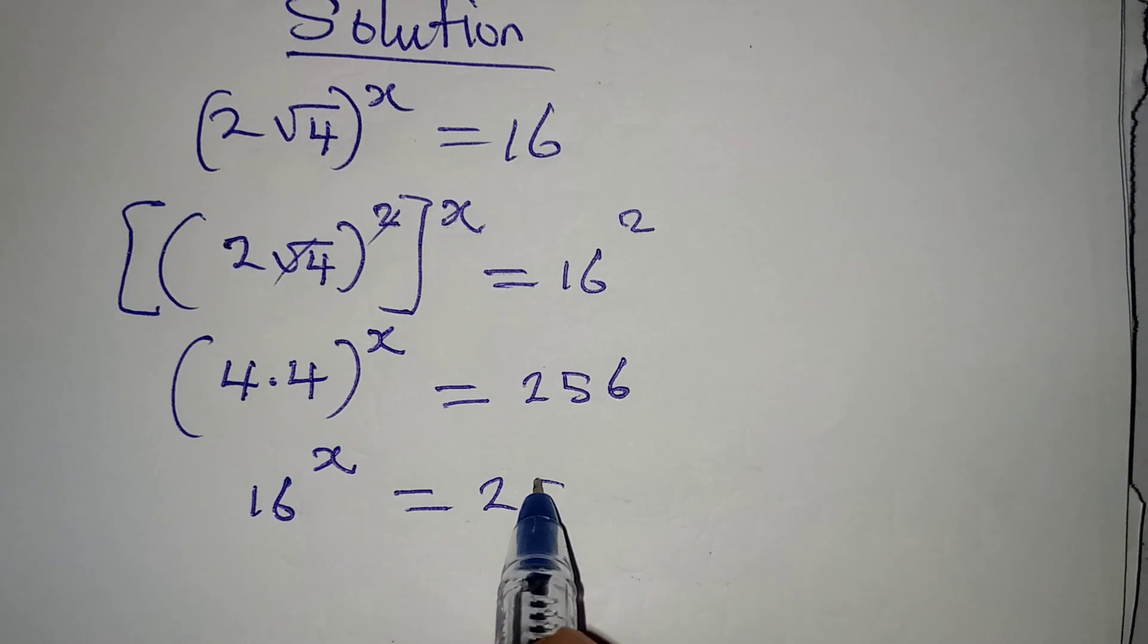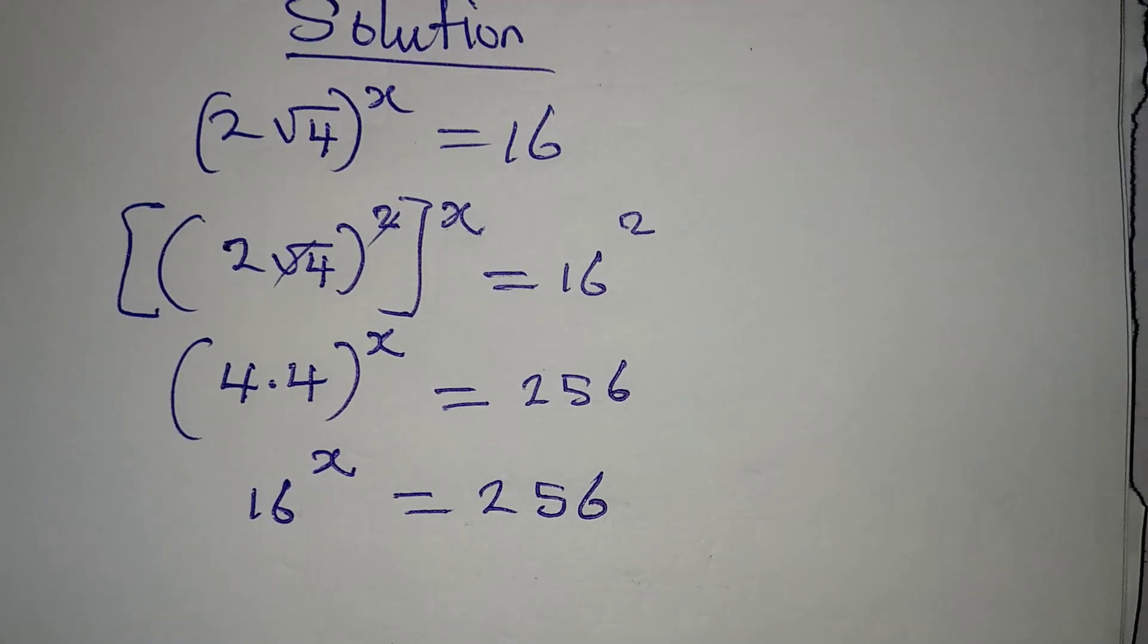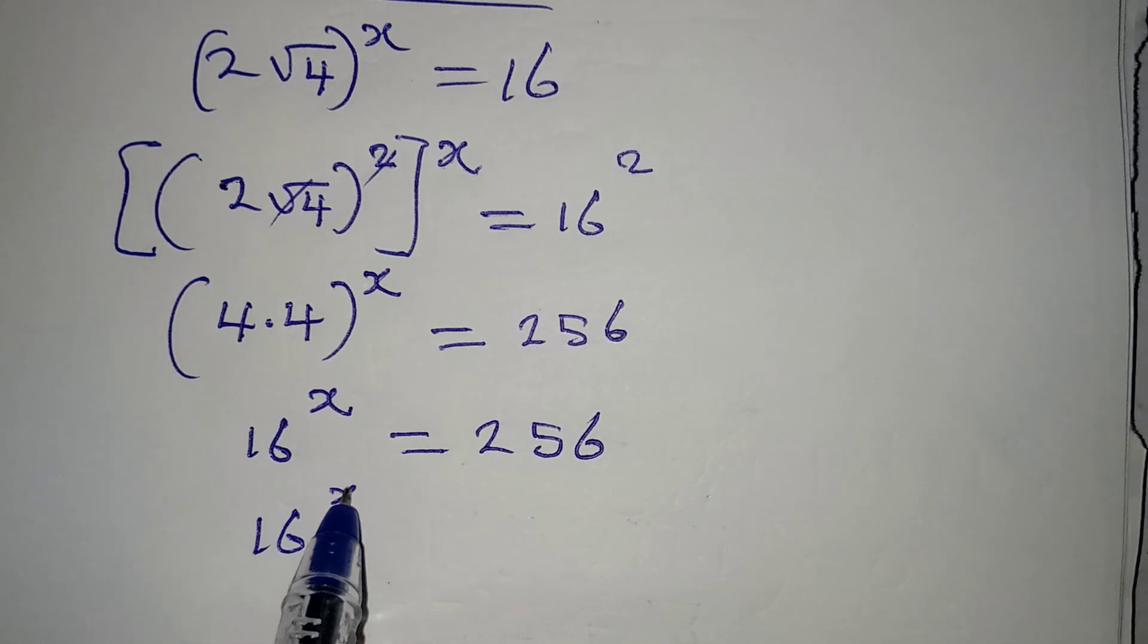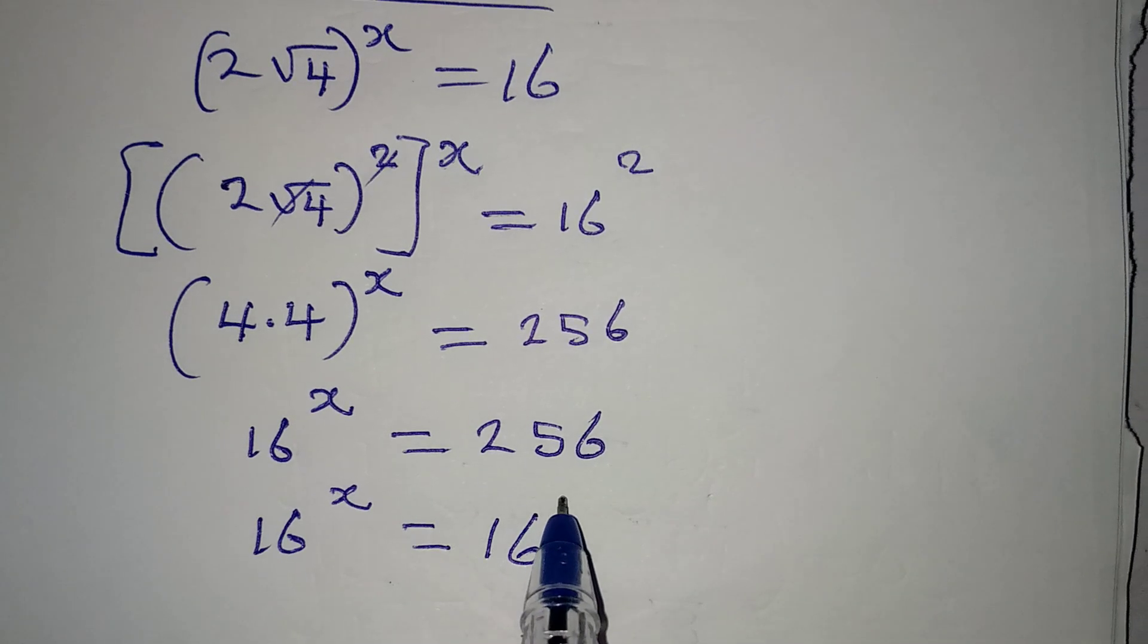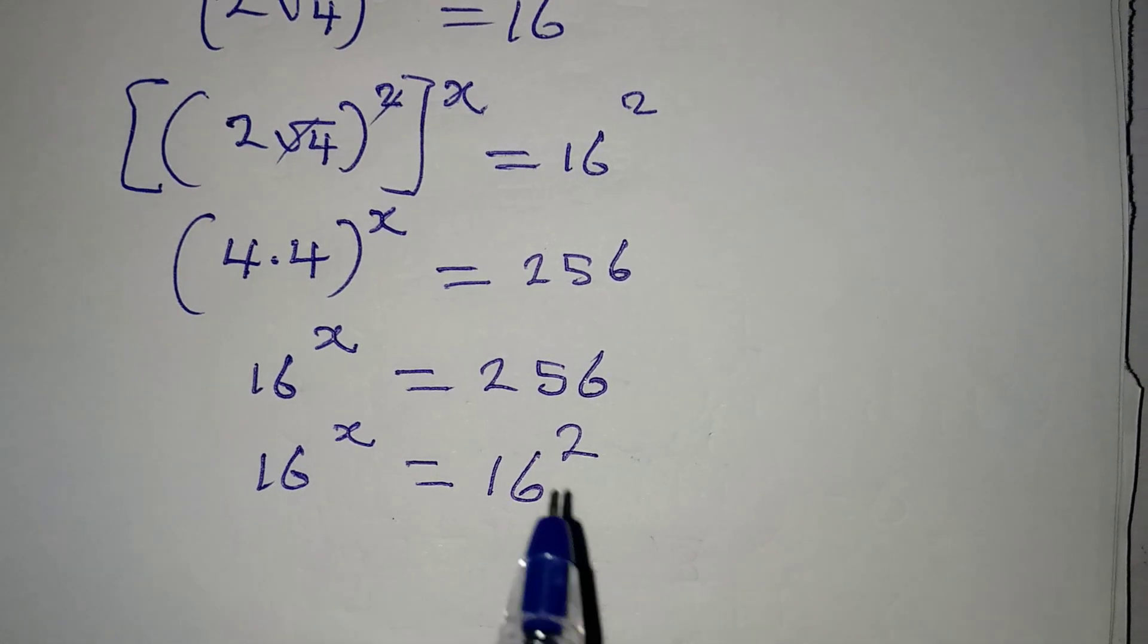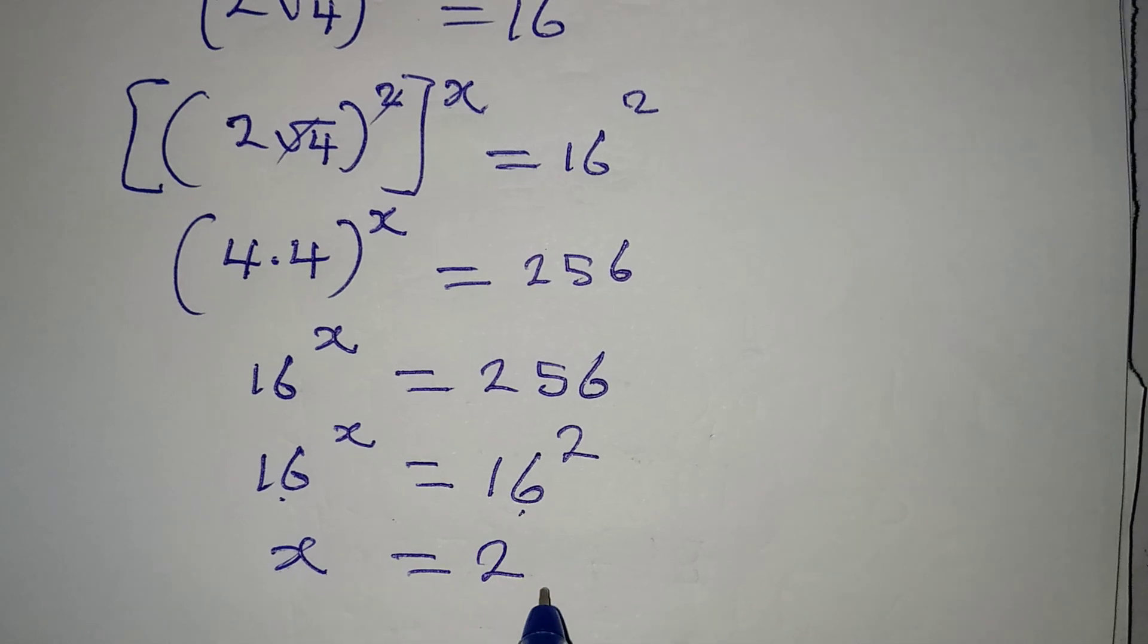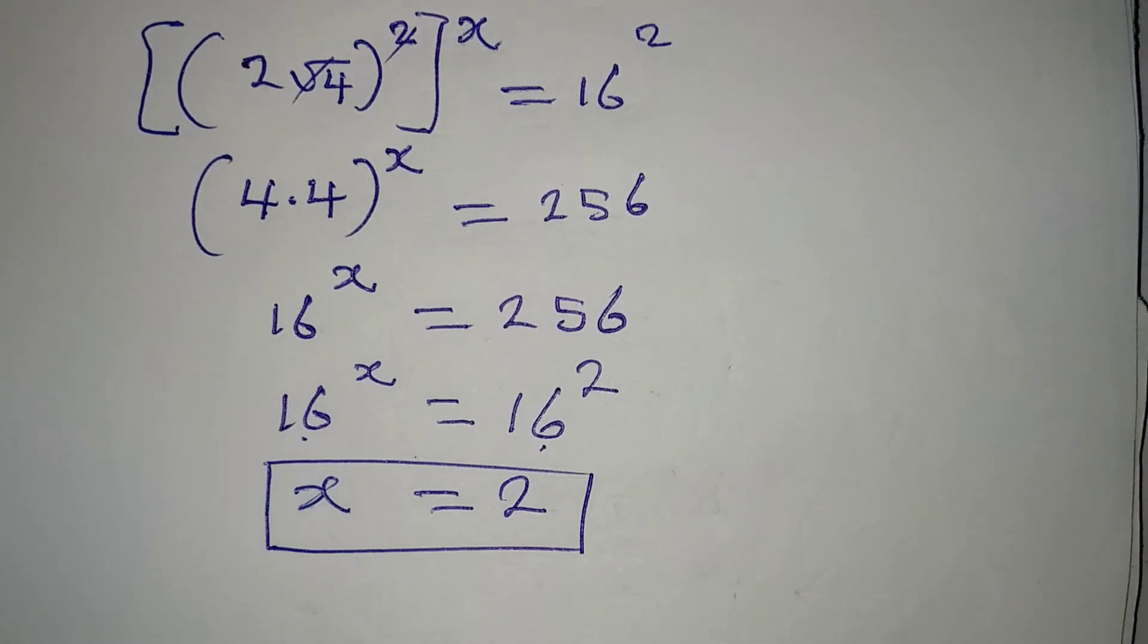From here, what do we have? 4 times 4 is 16 to the power of x, which will be equal to 256. From here, 16^x equals 256, which is still 16 to the power of 2 because 16 times 16 is 256. We have the same base, so the powers should be equal, so x equals 2. This is the solution when you use the first method.